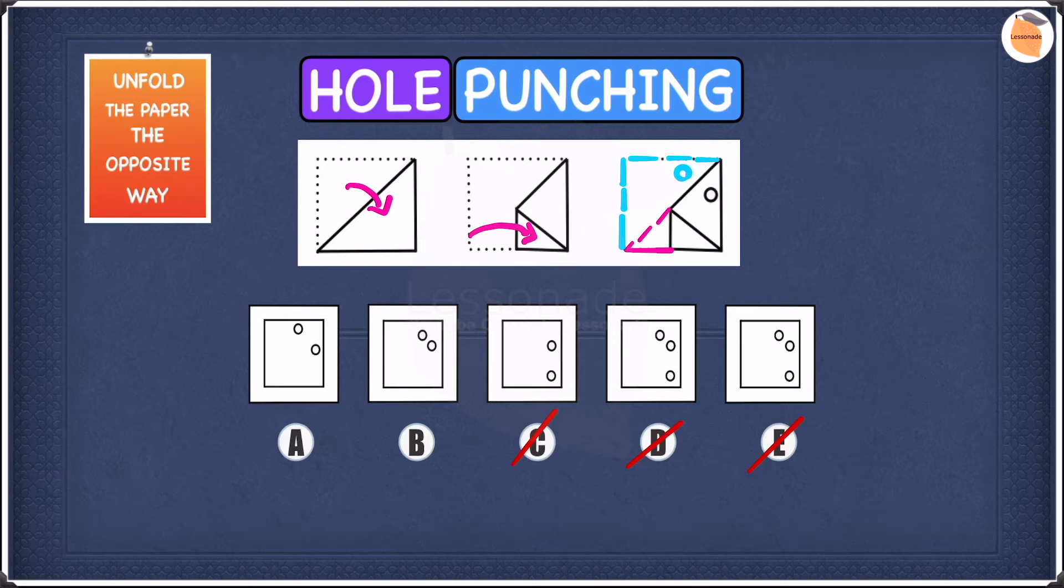So the only thing that's different between A and B is the gap between the circles. In both of these circles, they're next to the end of the paper, so next to the edge, and they also have a large gap between them.